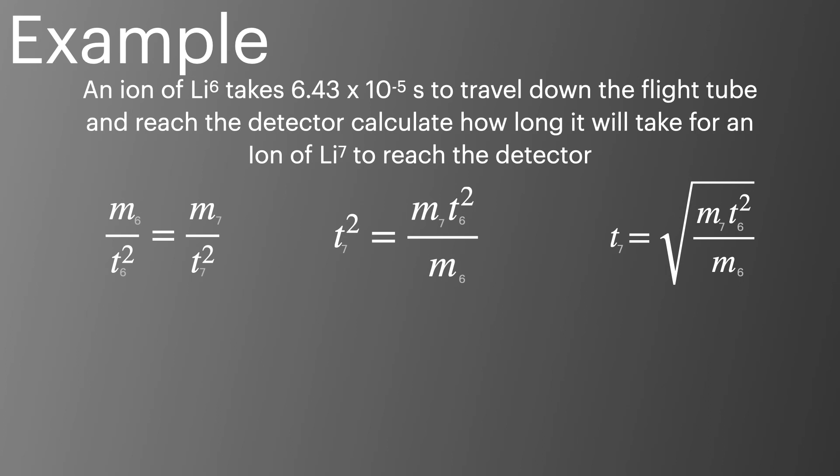To make it clear, I've added the 6s and the 7s next to each of the masses and the times so we know when we're talking about lithium 6 ions or when we're talking about lithium 7 ions. We're trying to work out the time taken for a lithium 7 ion to reach the detector. Now we have the rearranged form, all we need to do is plug the numbers in to work out the time taken is 6.95 times 10 to the minus 5 seconds. A relatively simple solution for quite a complex problem.